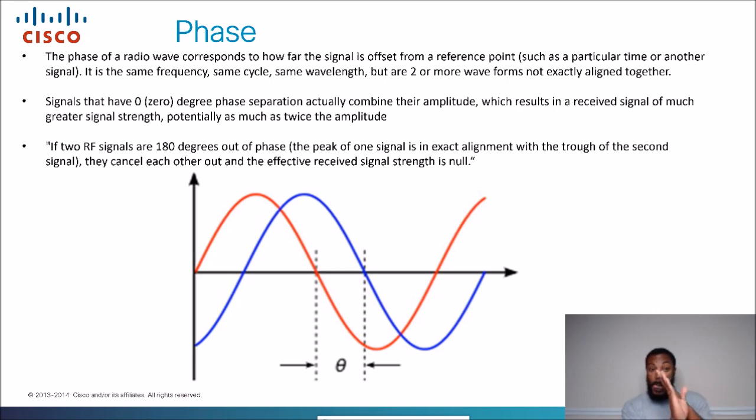If the two RF signals are 180 degrees out of phase, the peak of one signal is exact alignment with the trough of the second signal. They cancel each other out. And the effect of receive signal strength is null. So this is akin to noise cancellation headphones. When you have two signals that are the opposite of each other, then it takes away the sound. And that's exactly how noise cancellation headphones work. It takes the signal and puts the exact opposite of the wavelength. And then it canceled out the noise. They cancel each other out. And the effect of signal strength is null, which is basically zero. So it takes the noise and basically shuts it out. That's exactly how noise cancellation headphones work.